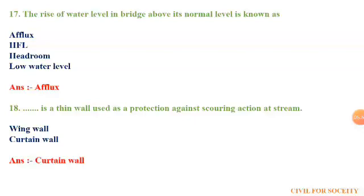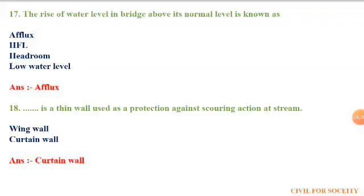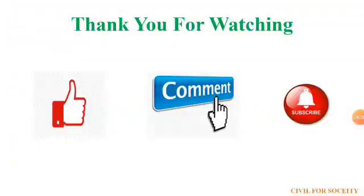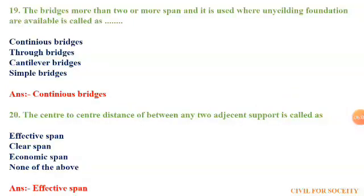The eighteenth question — fill in the blank: a thin wall used as protection against the scouring action at a stream. The options are wing wall and curtain wall. The correct answer is curtain wall. The nineteenth question: a bridge with more than two spans, used where unyielding foundations are available, is called. The options are continuous bridge, through bridge, cantilever bridge, and simple bridge. The correct answer is continuous bridge.